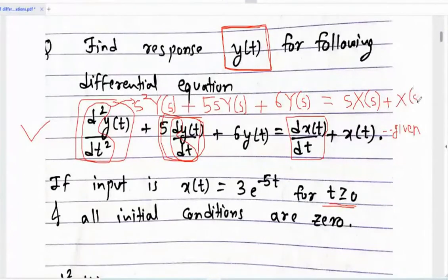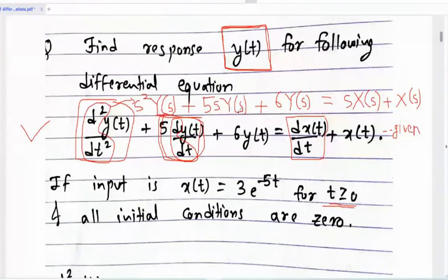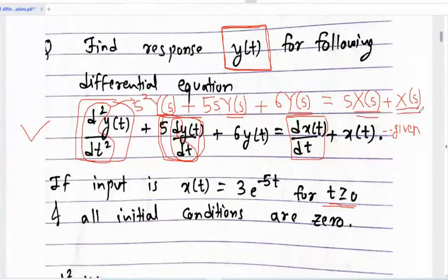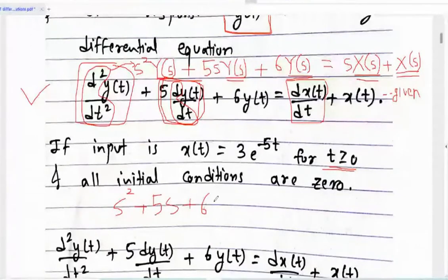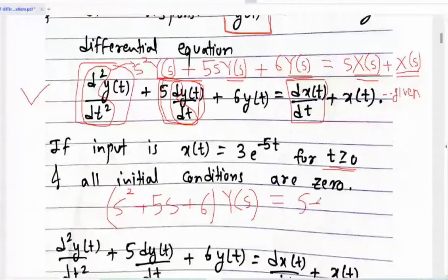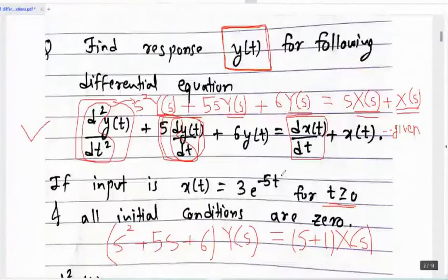Now take Y(s) common from s²Y(s), 5s·Y(s), 6Y(s). Y(s) is common. And on the RHS, take X(s) common. After taking Y(s) common and X(s) common, we get: (s² + 5s + 6)·Y(s) = (s + 1)·X(s). We have to determine y(t), which means we need the inverse Laplace transform.